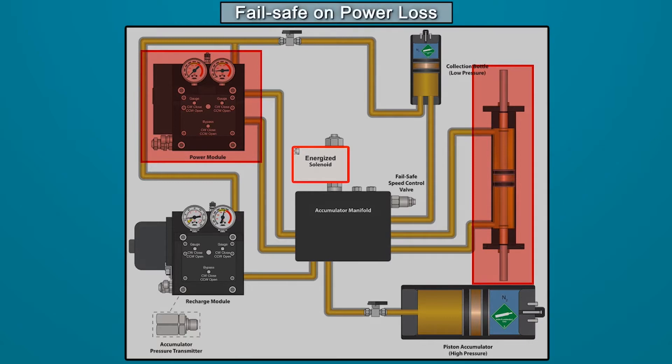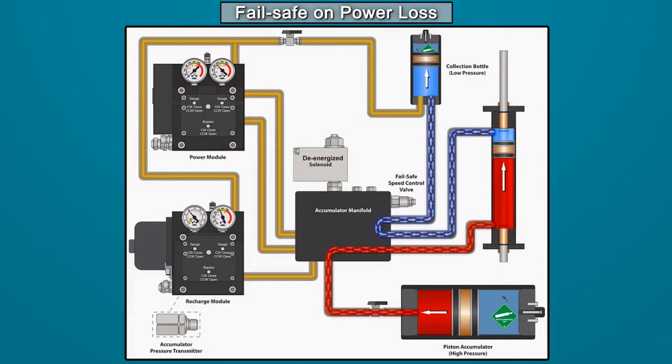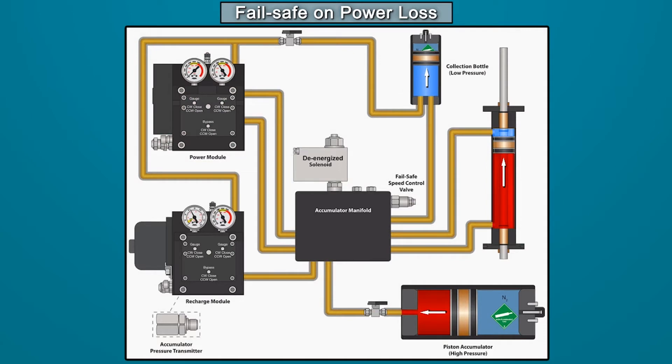On a trip or loss of power condition the solenoid valve is de-energized causing it to open. The accumulator pushes oil into the connected hydraulic cylinder while the pressurized collection bottle provides a place for the displaced cylinder volume to empty into. This moves the connected valve or device to the fail-safe position.